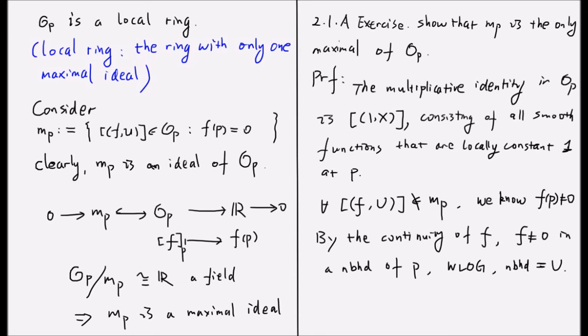This germ is actually invertible in the stalk because the product [1/f, U] and [f,U] is equal to the equivalence class of functions that are locally constant 1 at p. This shows [f,U] is invertible.